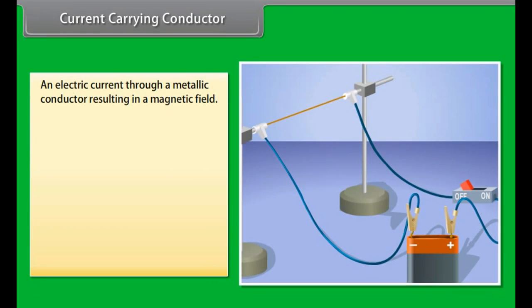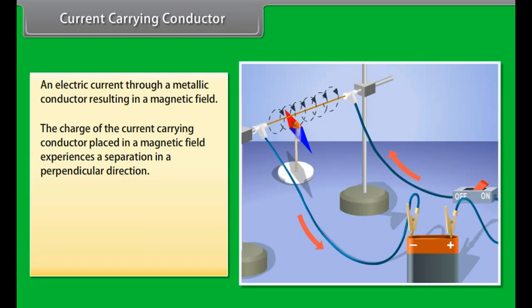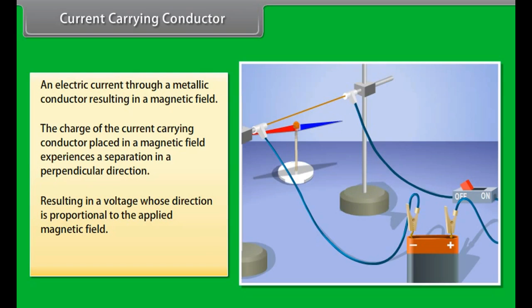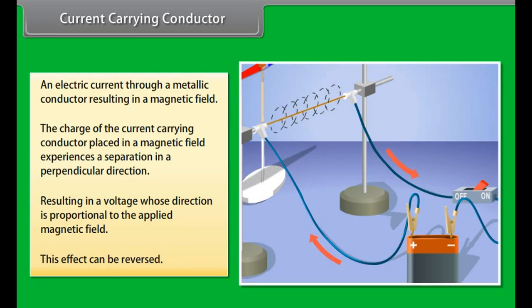Current-carrying conductor. An electric current passing through a metallic conductor results in a magnetic field being created around it. The charge of the current-carrying conductor placed in a magnetic field experiences a separation in a direction that is perpendicular to the current and the magnetic field. This results in a voltage whose direction is proportional to the applied magnetic field. This effect can also be reversed.